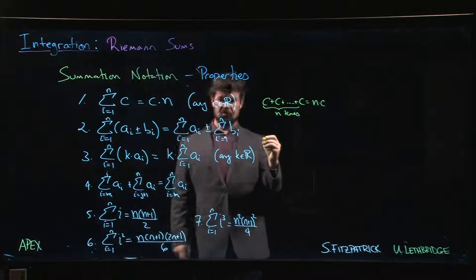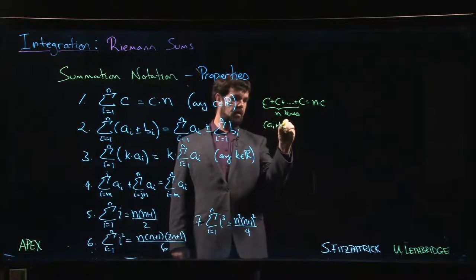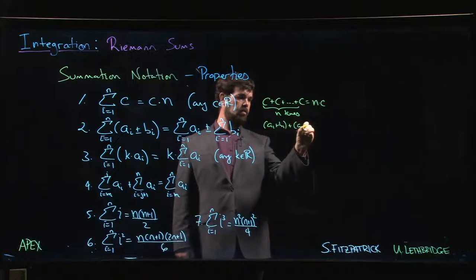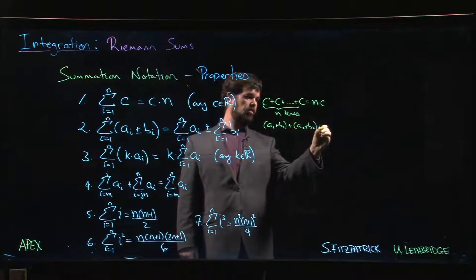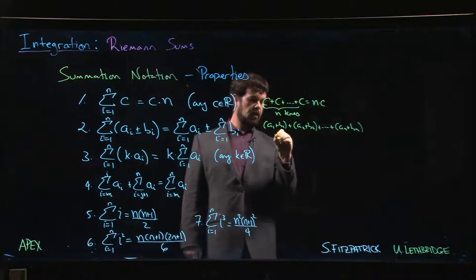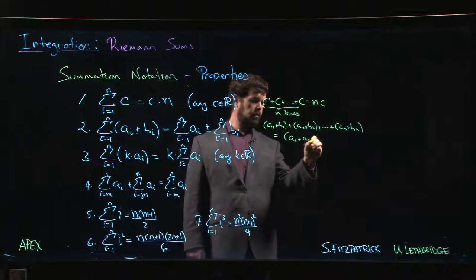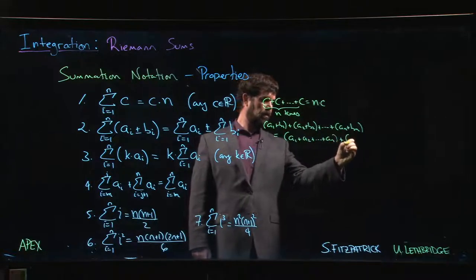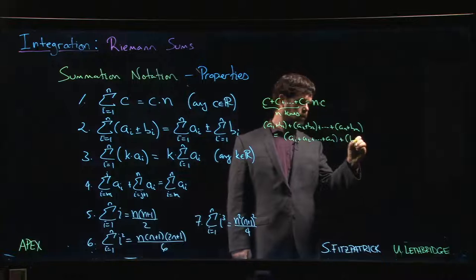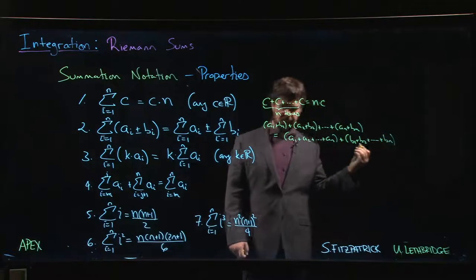...is just observing that if you're doing a1 plus b1 and then a2 plus b2 and so on down to an plus bn, you could rearrange this sum. You could do the a's and then the b's. That's all it's saying.